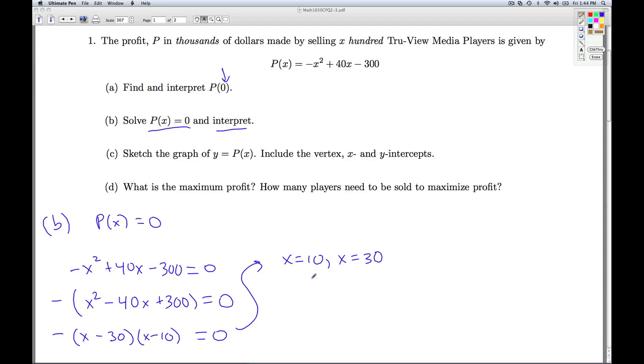So once again, that's the find part. What's the interpret part? Well, X equals 10 corresponds to 10 hundred media players. That's 1,000 players. X equals 30 corresponds to 30 hundred players, or 3,000 players. That's what those X values mean. These are the X values that you plug in to get P of X equals 0. So these are the number of players to sell to earn, well, P of X equals 0. P is the profit, $0,000, so to earn $0.